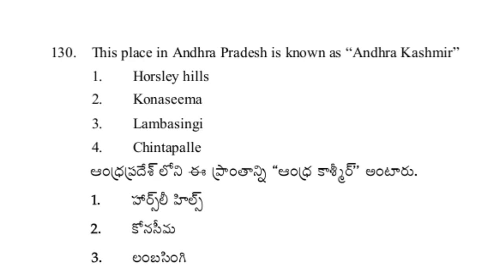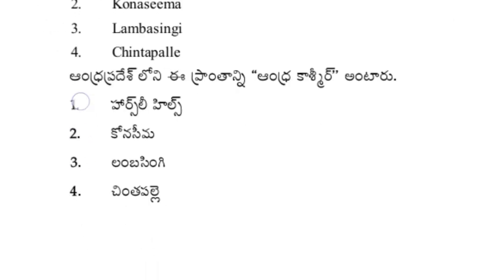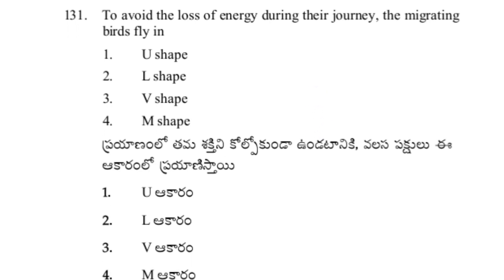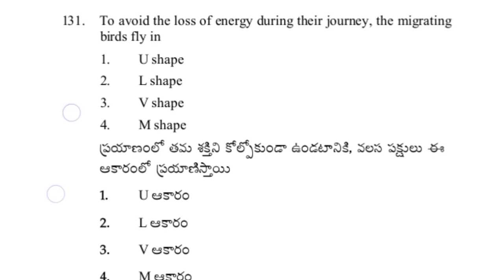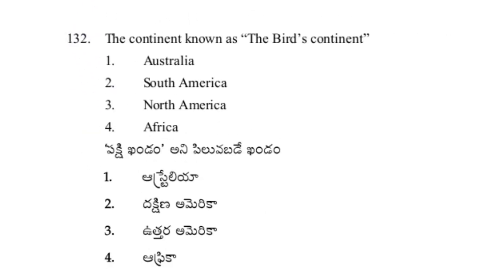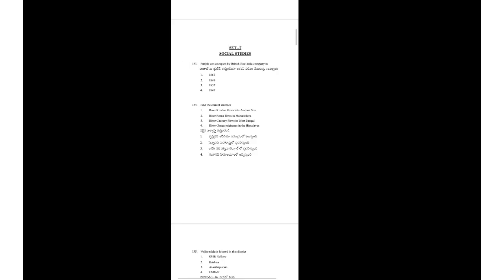To avoid the loss of energy during the journey, migrating birds fly in V-shape — option 3. Next: the continent known as the bird's continent — option 2, South America.